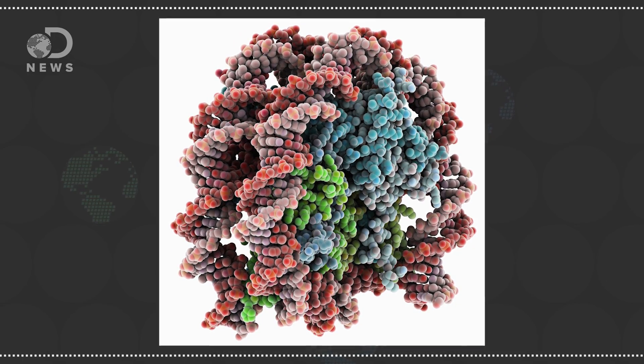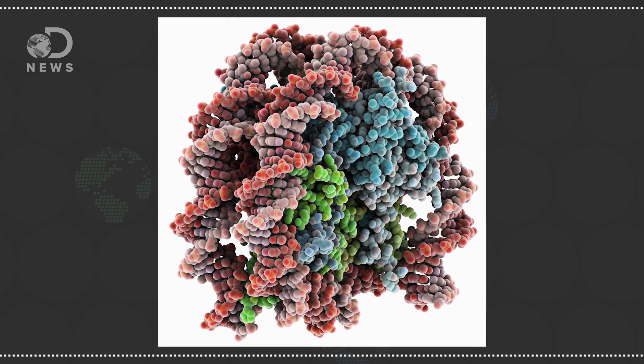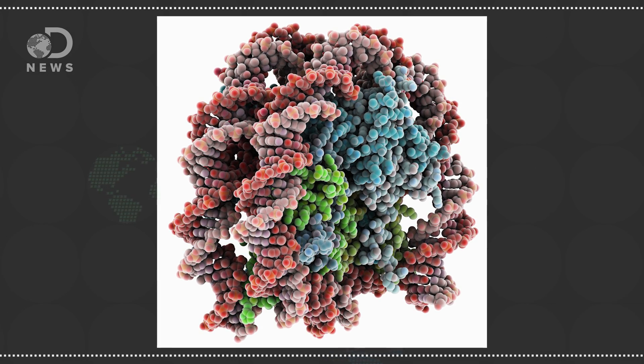DNA wraps itself around the histones like a spool, storing the DNA safely and decreasing its length by about seven times, but it's not just for storage. It can also determine what genes near each histone are switched on or off.